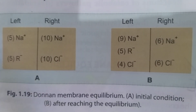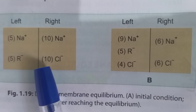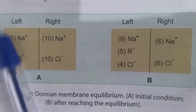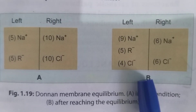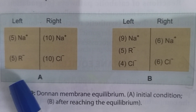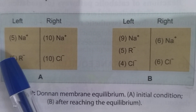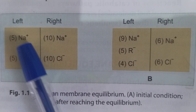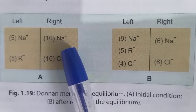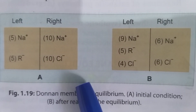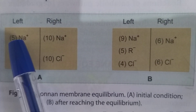Let's see what Donnan's equilibrium actually means through a hypothetical situation. Suppose you have two compartments — a right and a left compartment — separated by a semipermeable membrane. The left compartment consists of 5 Na+ ions and 5 R- ions, where R- represents non-diffusible anions, while the right compartment consists of 10 Na+ ions and 10 Cl- ions. Na+ and Cl- are diffusible, whereas R- is non-diffusible.